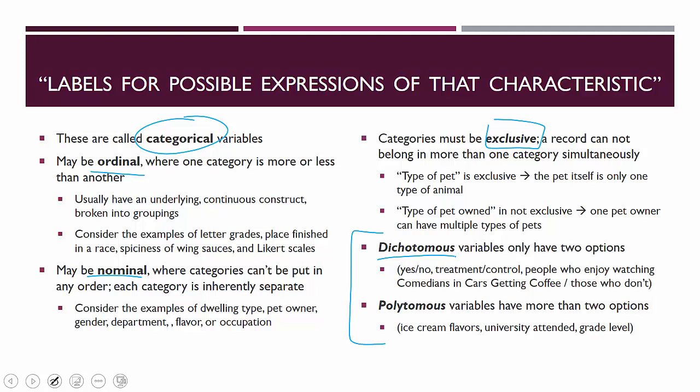A polytomous variable has more than two options. An example might be ice cream flavors — Baskin-Robbins has 31 of them — or the university attended, or grade level. Those are all polytomous variables.